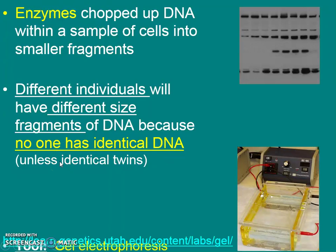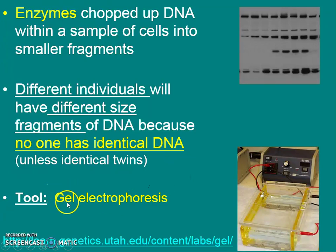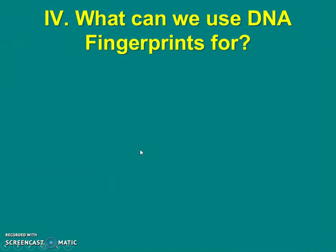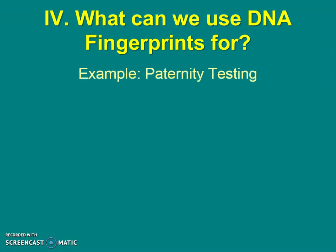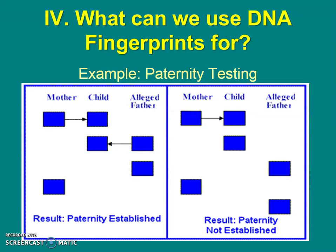We use a tool called gel electrophoresis — it has electricity and this jello-like material that we put the DNA on. It's really useful. We can use it for lots of different things, including paternity testing.